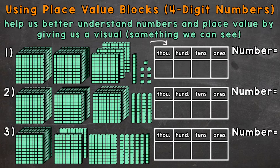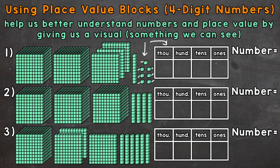Speaking of one whole, let's start with the ones place — the individual blocks right here. Let's see how many we have: one, two, three, four, five, six, seven. So seven individual blocks, seven wholes. We can represent that in our number by putting a seven in the ones place.